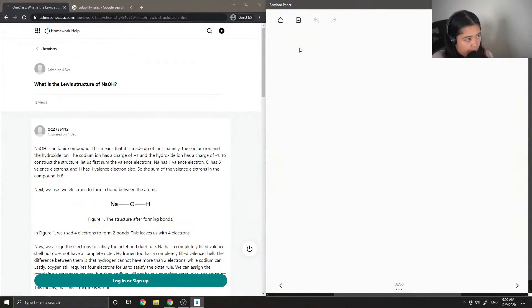Okay, so question four, what is the Lewis structure of sodium hydroxide? Okay so when we write out Lewis structures, I like to first figure out my total number of valence electrons.